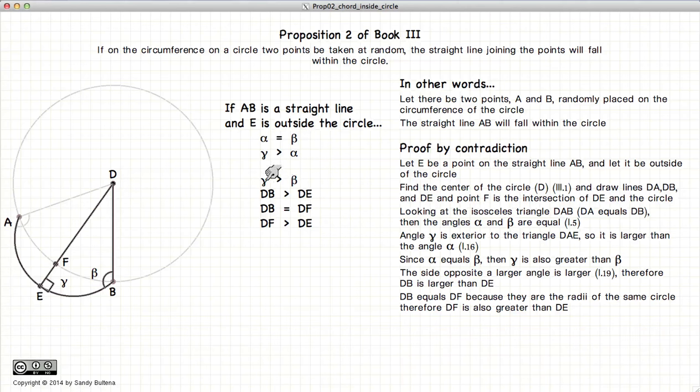And if you recall from Proposition 19 of Book 1, the larger side is opposite the larger angle. So since gamma is greater than beta, in principle, this line will be larger than this line.